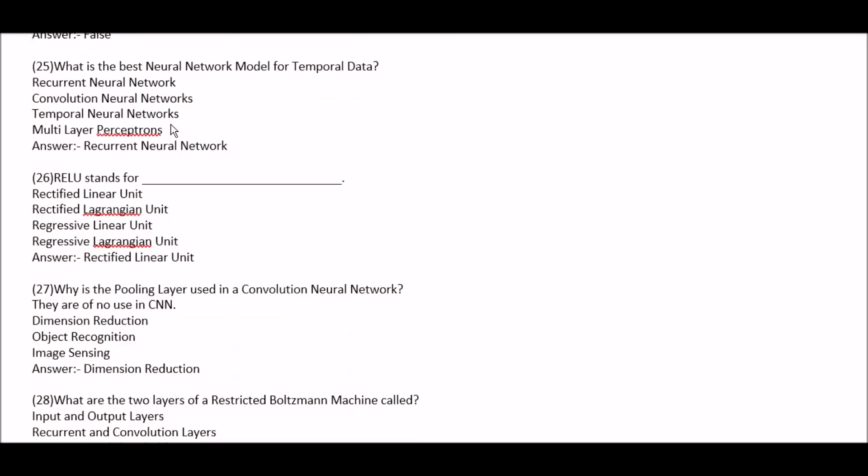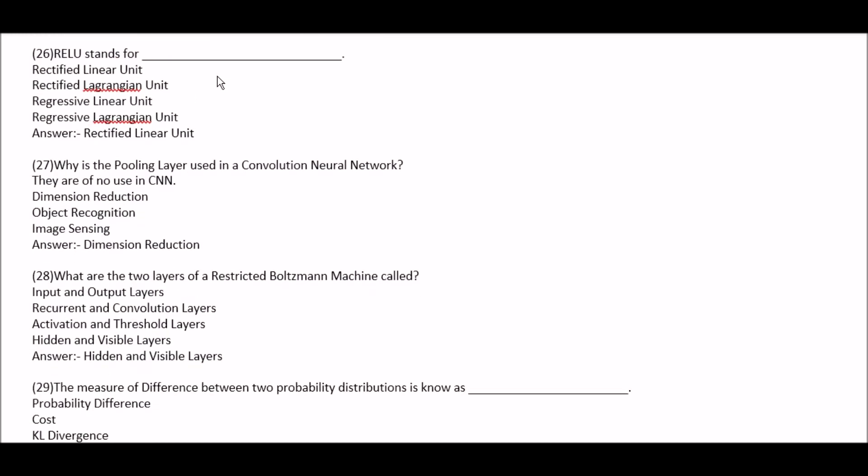What is the best neural network model for temporal data? Option A: recurrent neural networks. Option B: convolution neural networks. Option C: temporal neural networks. Option D: multilayer perceptrons. Right answer is recurrent neural networks. Next question: ReLU stands for — option A: rectified linear unit. Option B: rectified Lagrangian unit. Option C: regressive linear unit. Option D: regressive Lagrangian unit. Right answer is option A, rectified linear unit — this is an important question for your examination.